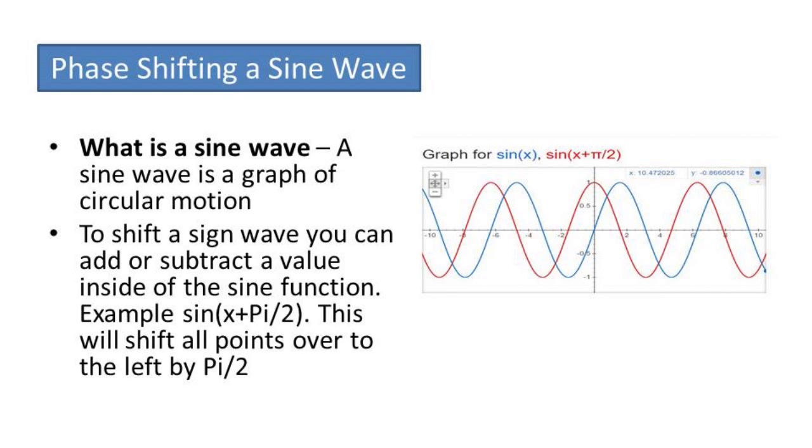So now what is phase shifting? Phase shifting is moving the graph of the sine wave to the left or right by adding inside of the sine function. In this slide for an example I did plus pi over 2. So when we add plus pi over 2 inside of the sine function it shifts all points over but to the left by pi over 2.